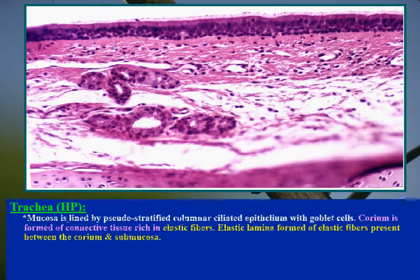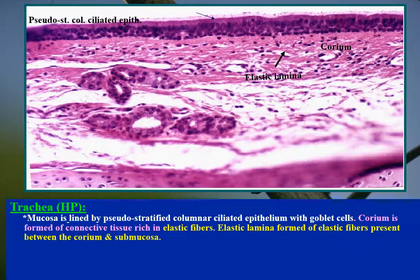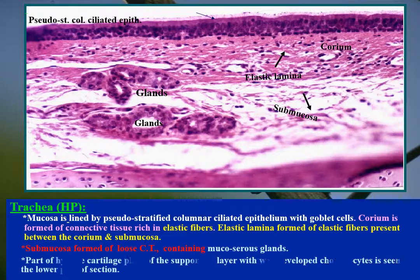Mucosa is lined by pseudostratified columnar ciliated epithelium with goblet cells, though goblet cells are not detected in the photo. Corium is formed of connective tissue rich in elastic fibers. The elastic lamina of elastic fibers is present between the corium and submucosa. Submucosa is composed of loose connective tissue containing mucocerous glands. Part of the hyaline cartilage plate of the supporting layer with well-developed chondrocytes is seen in the lower part of the field.